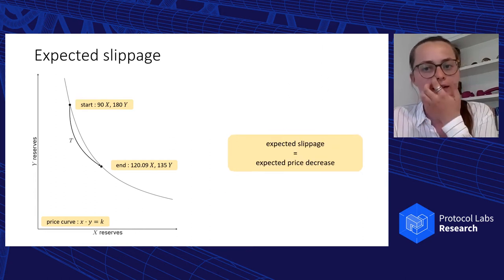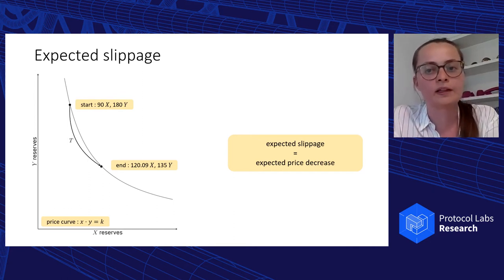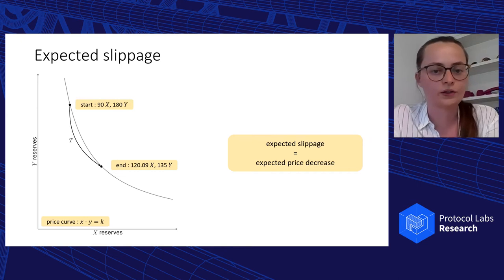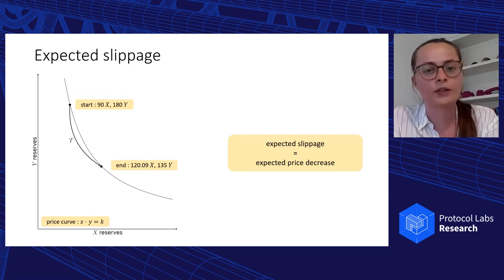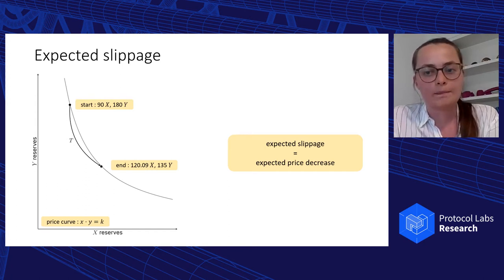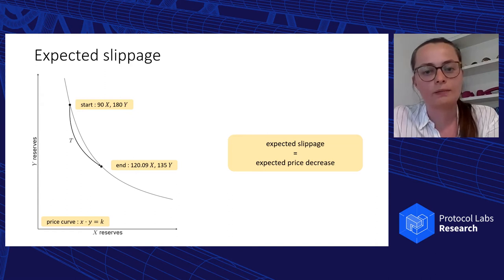The pool's price at the start was 1X for 2Y, but that is not what our trader received. Every trade is associated with what is known as expected slippage, which measures the expected decrease in price based on trading volume and available liquidity. The more the trade moves the pool across the price curve, the higher the slippage, due to the convexity of the price curve. In our case, we had a very large trade relative to the pool reserves, so there was a lot of expected slippage — instead of 1X being worth 2Y, our trade only received 4Y for 3X.